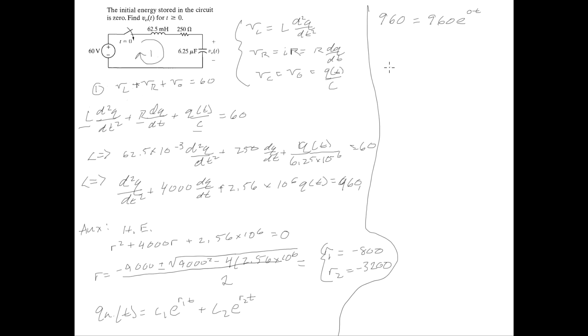So we don't have to multiply by a factor of T in our particular solution. Our particular solution is essentially, we'll just call it QP of T, is essentially just some random constant. We'll just say A0.